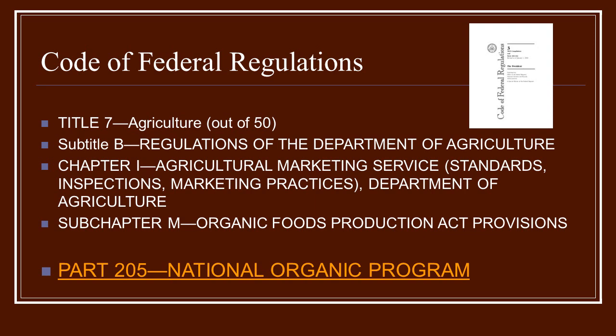Within the agricultural part of the CFR, it is found under Subtitle B, and then further subdivided into Chapter 1, then Subchapter M — Organic Foods Production Act Provisions — and under that we have Part 205, which is further subdivided into more subparts.